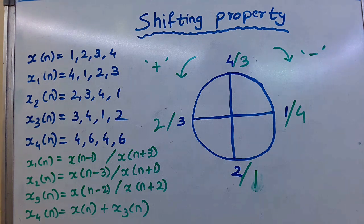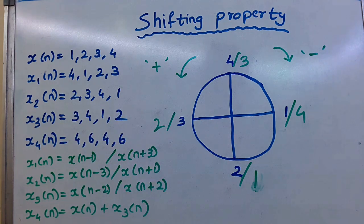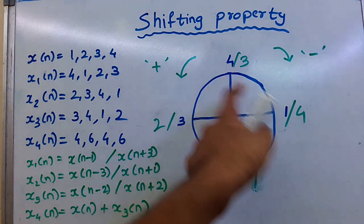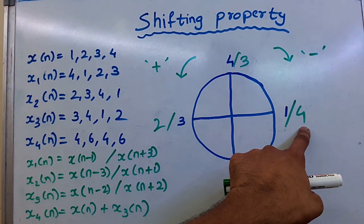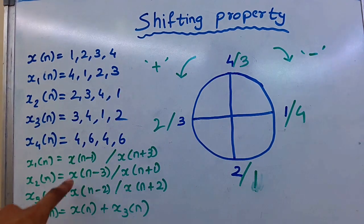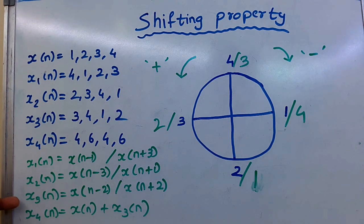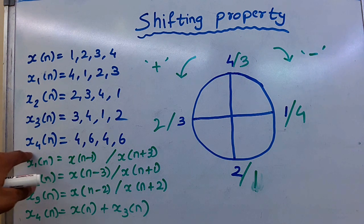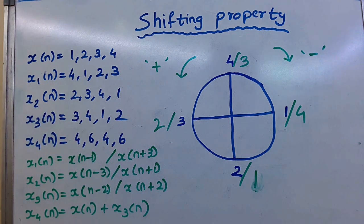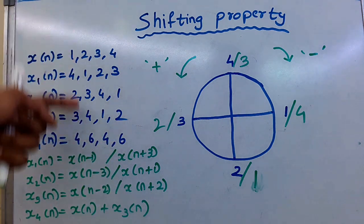Since it shifts right by one position, x1 of n equals x of n minus 1. If we have the option for x4 of n, this is tricky. We see 4, 6, 4, 6, which doesn't match any single sample.